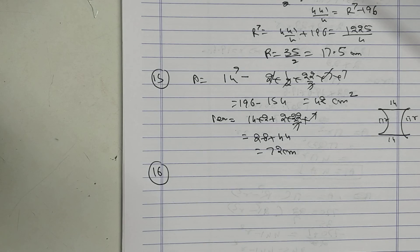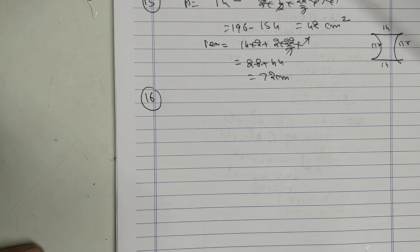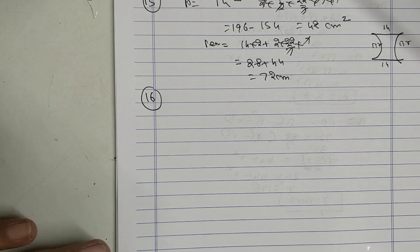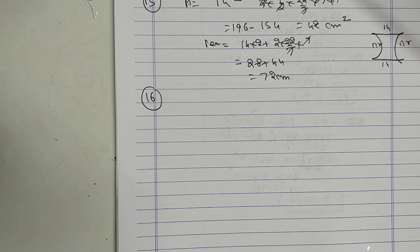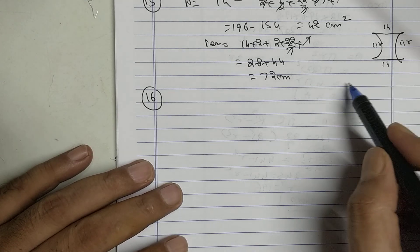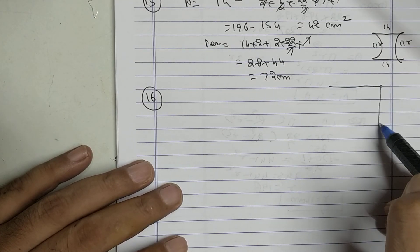Sum number 16. Here don't find perimeter, find only area. See the figure, easy to understand.